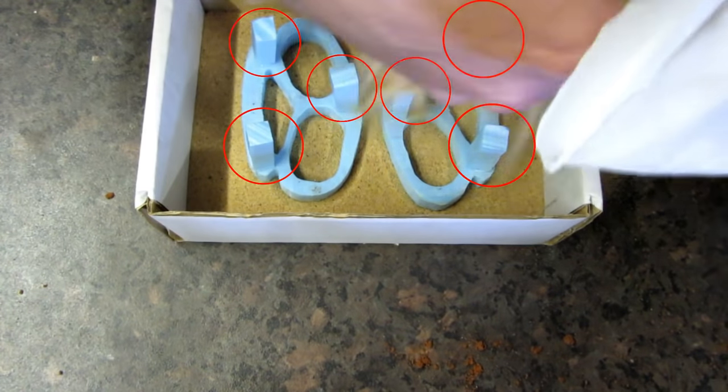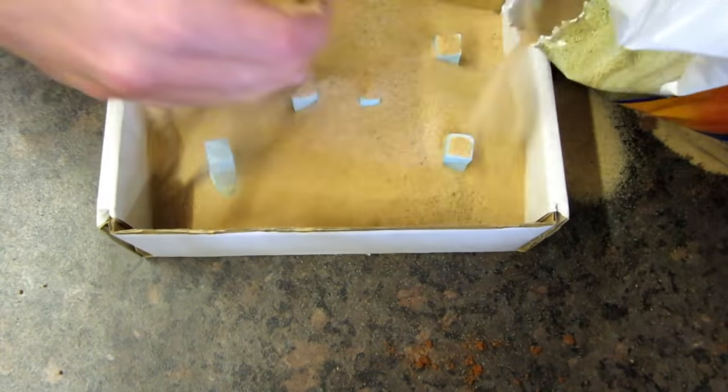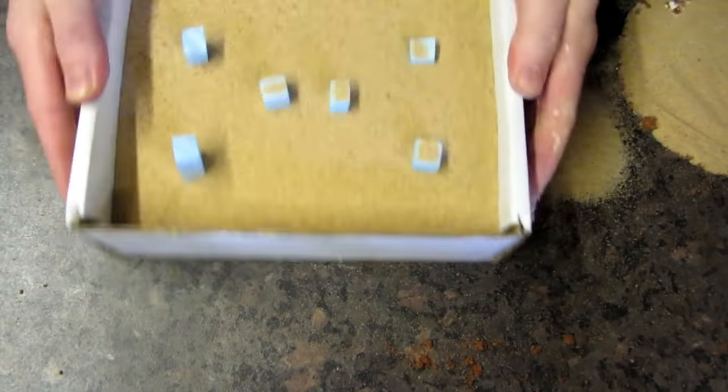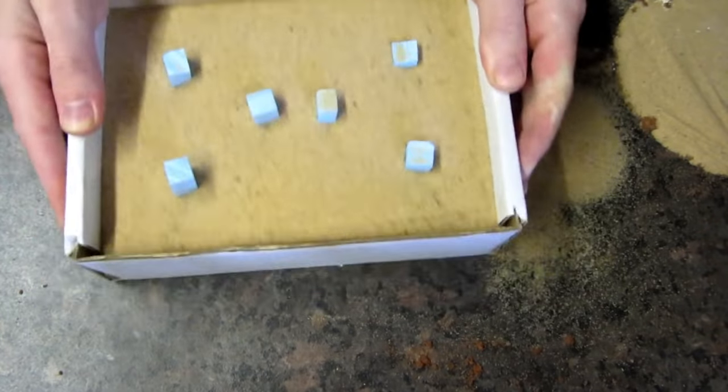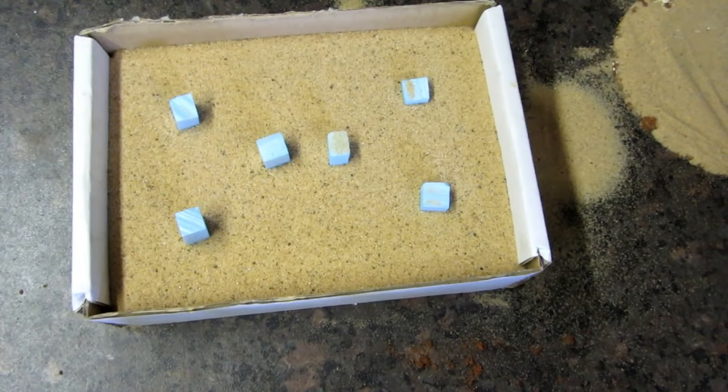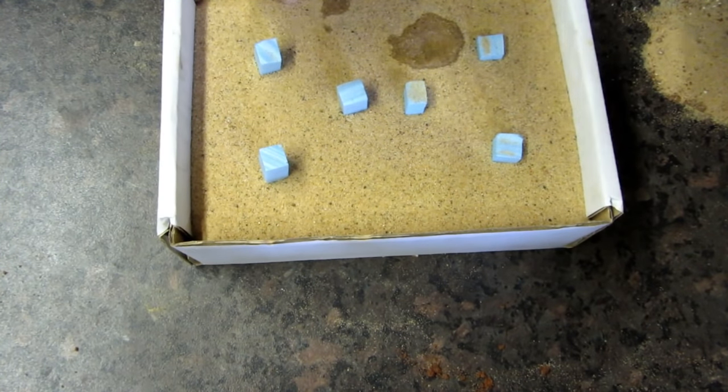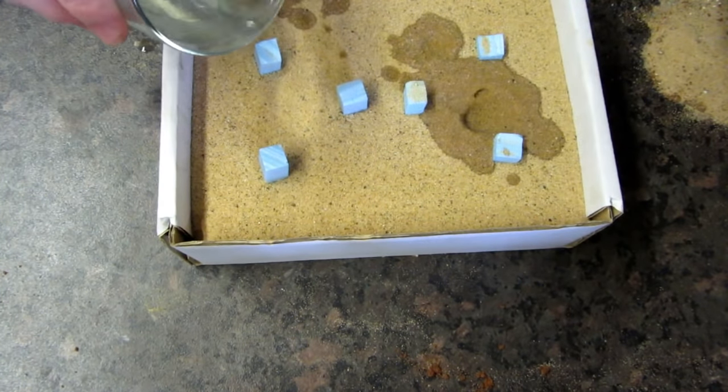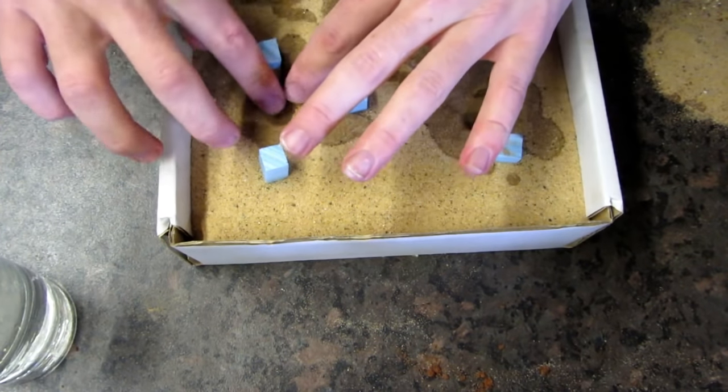Notice I've added three sprues on each cutout, and then bury the cutouts until only the tops are showing. Shake the box to allow the sand to fill in any gaps. Then add some water to the surface where the metal will be poured. This will allow us to form the sand into a bowl shape to prevent the metal from pouring over.